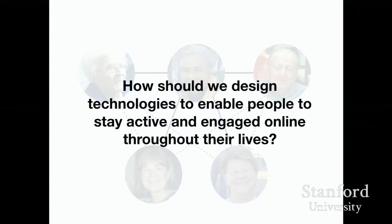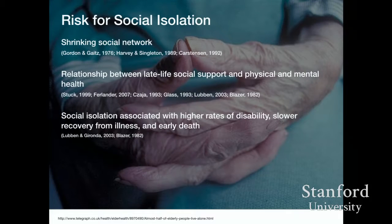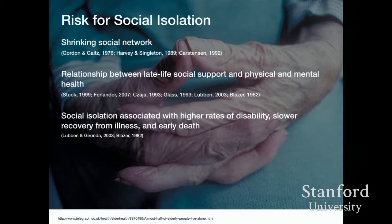In today's talk, I'm going to introduce several systems that help us think about what it means to design for staying active and engaged online throughout the lifespan. This is a really important topic for many reasons. As we get older, our social networks tend to shrink. But there's a very clearly established relationship between having late-life social support and having positive physical and mental health outcomes. The flip side is that social isolation can be associated with higher rates of disability, slower recovery from illness, and even early death.